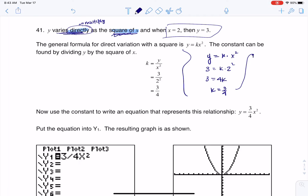And that allows me, instead of writing this general variation equation, I can write my specific one. Y would be equal to 3 fourths of x squared. So there is my variation equation.